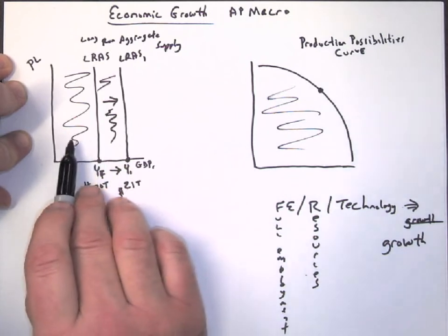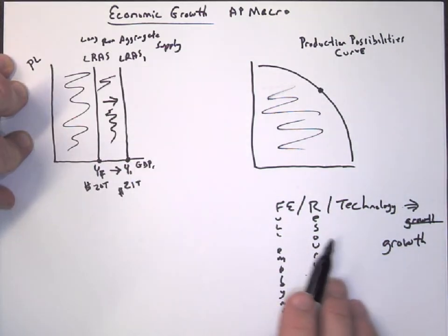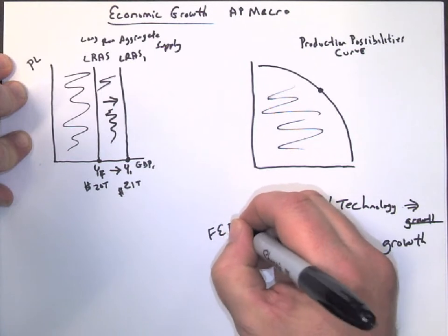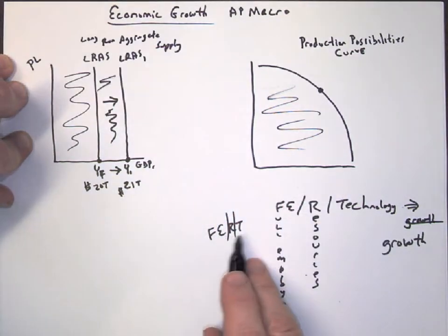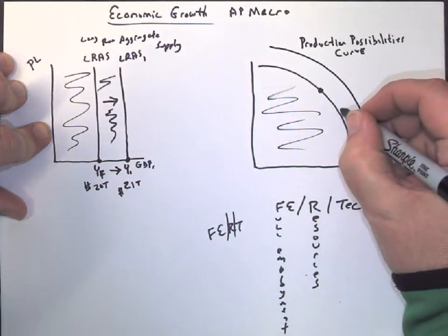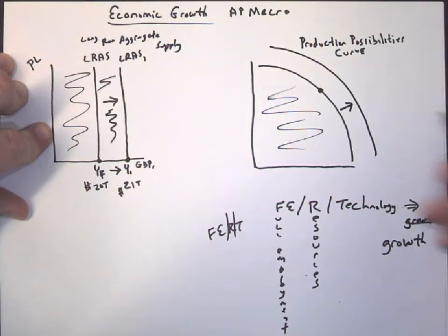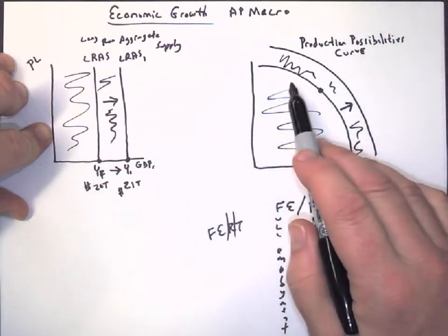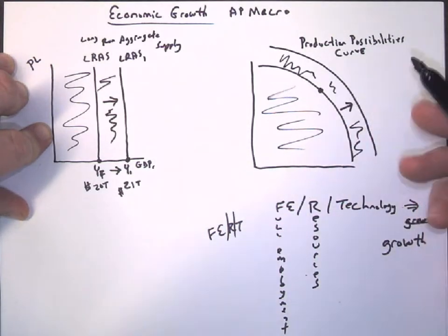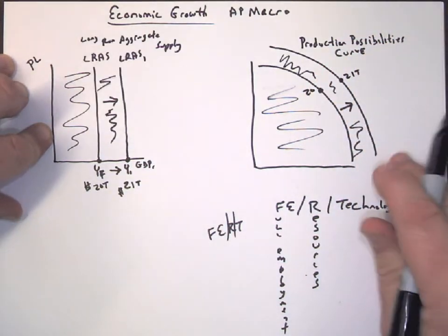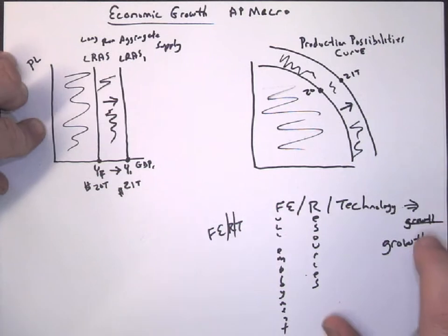So FERT, F-E-R-T, just like fertilizer, lets things grow, or helps things grow. So the production possibilities curve would actually shift outward as well. That could show all this is the new GDP we could make. So this is making more. So imagine that was our $20 trillion, and now we're making $21 trillion in GDP. So it's all about our potential GDP, and how it can grow.